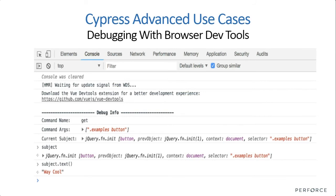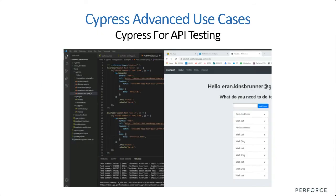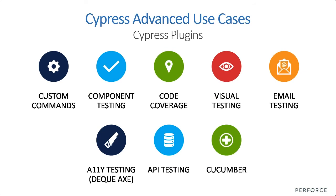Cypress is not based on CDP, but Cypress does have integration with the browser dev tools, so you can do debugging and get insights from the browser dev tools into your Cypress environment. I mentioned that Cypress can do API testing. Cypress comes with a lot of plugins, so you can maximize your test automation coverage with accessibility testing, visual testing, BDD, email testing and other capabilities. As we speak, I'm sure there's a new plugin being worked on by the community.